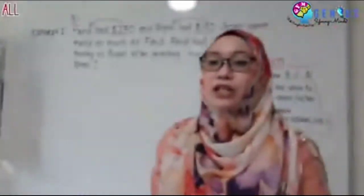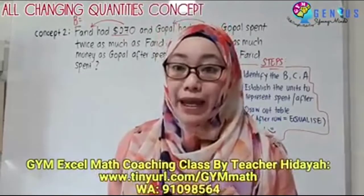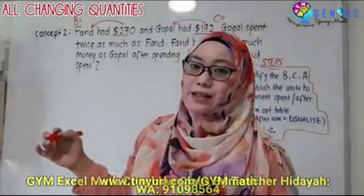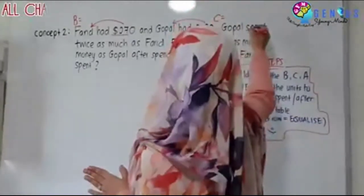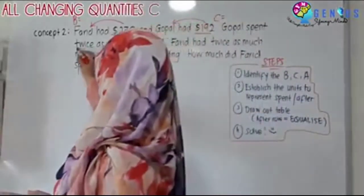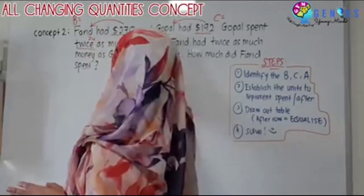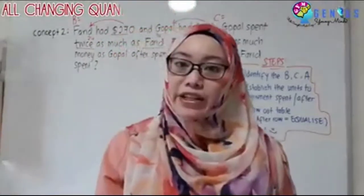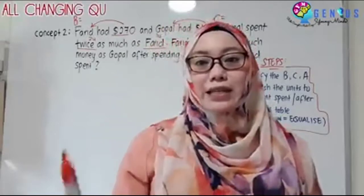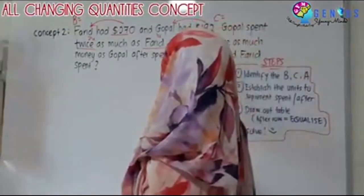Gopal spent twice as much. Spent is a change keyword, so when you see spent here, this is my change sentence. What did Gopal spend? Gopal spent twice as much as Farid. Twice means two units. As much as Farid is one unit. After the magic phrase 'as much as,' the person after 'as much as' will have one unit. So this is my change.